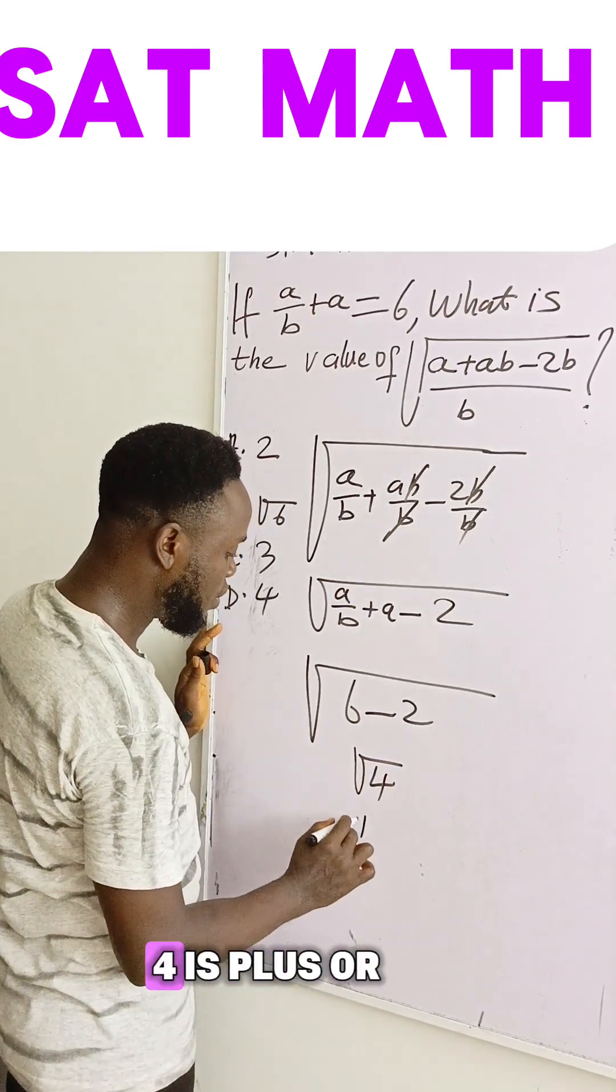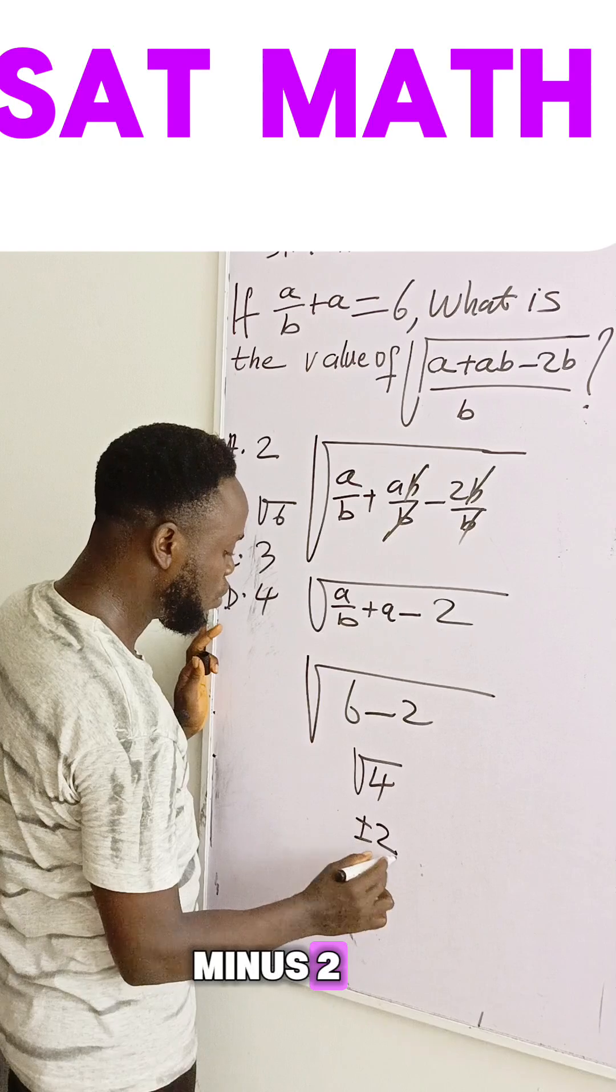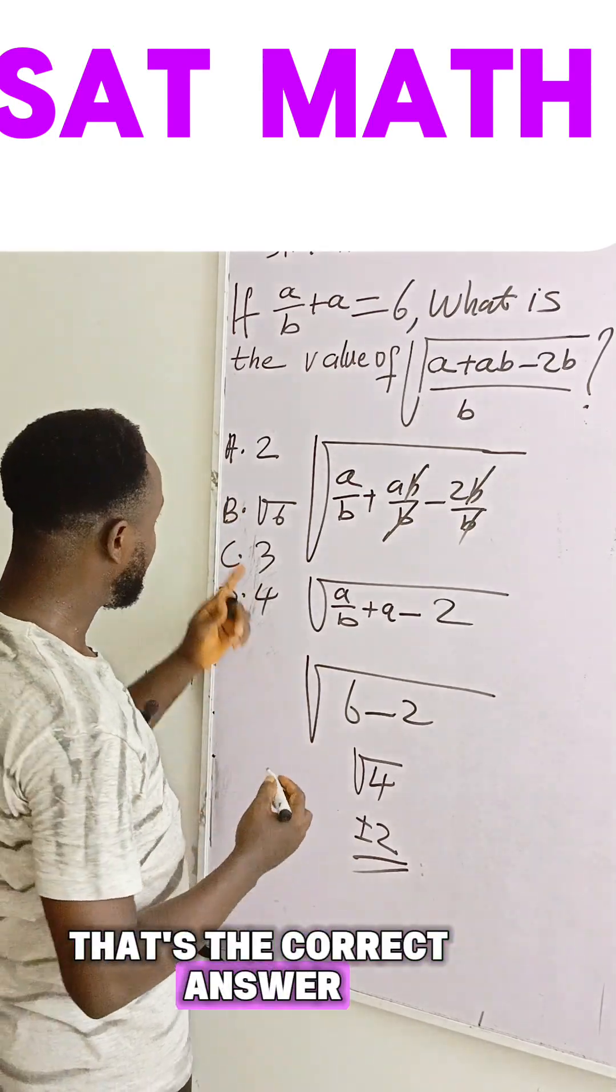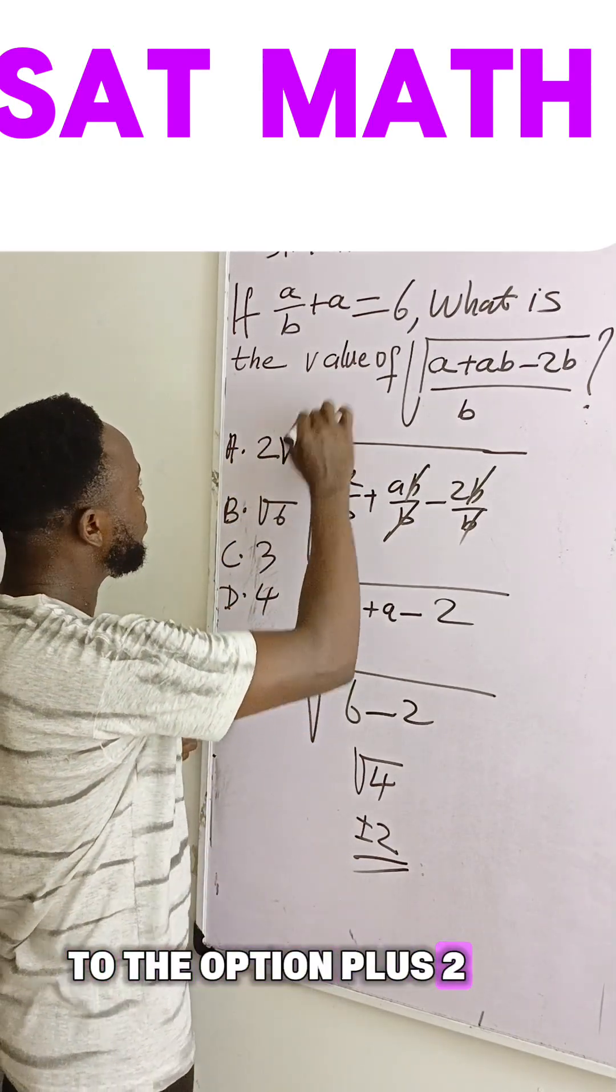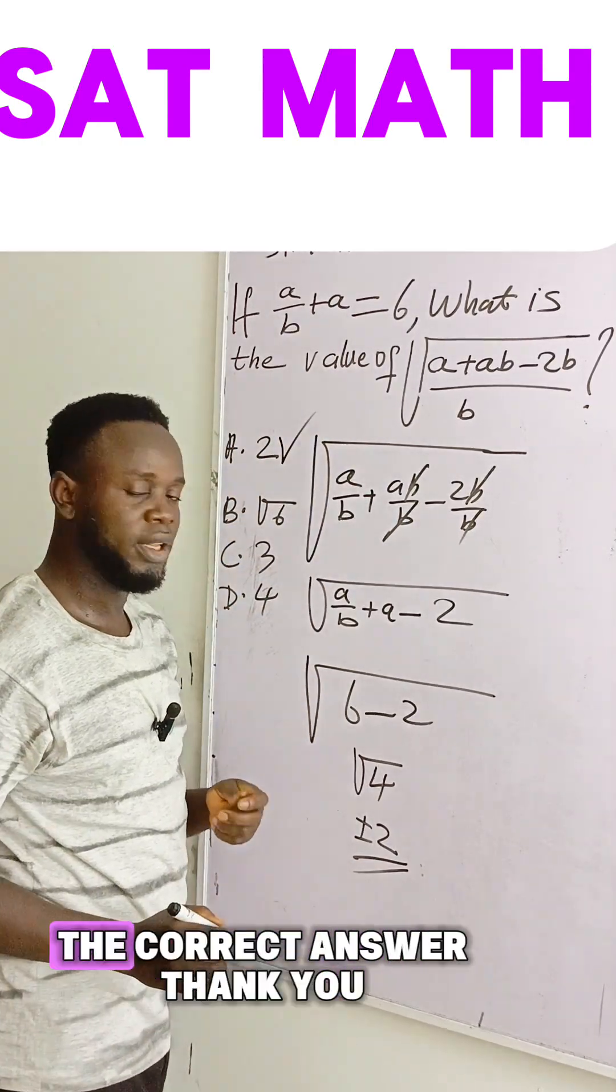And square root of four is plus or minus two as the correct answer. So when we come to the option, plus two, that is option A is the correct answer. Thank you.